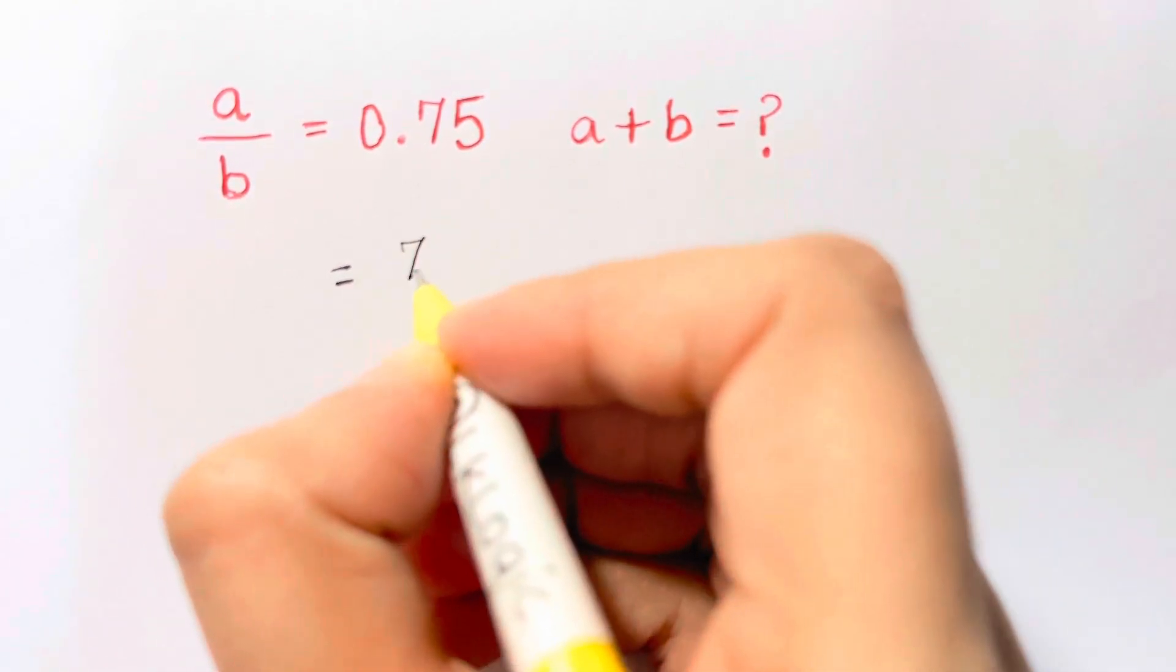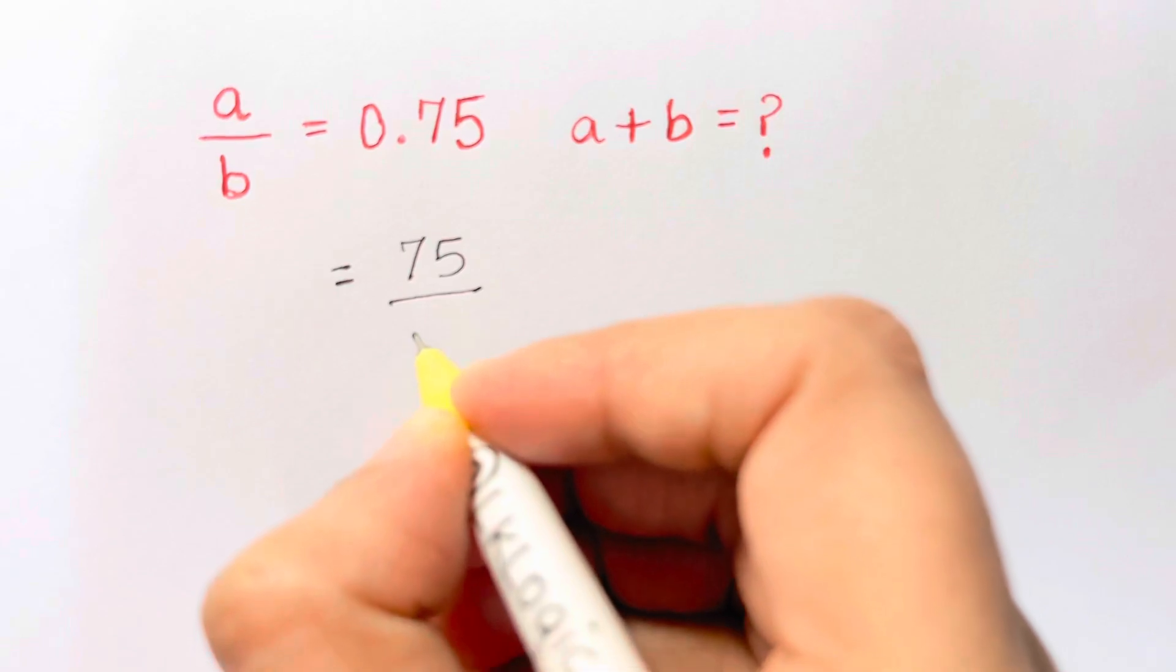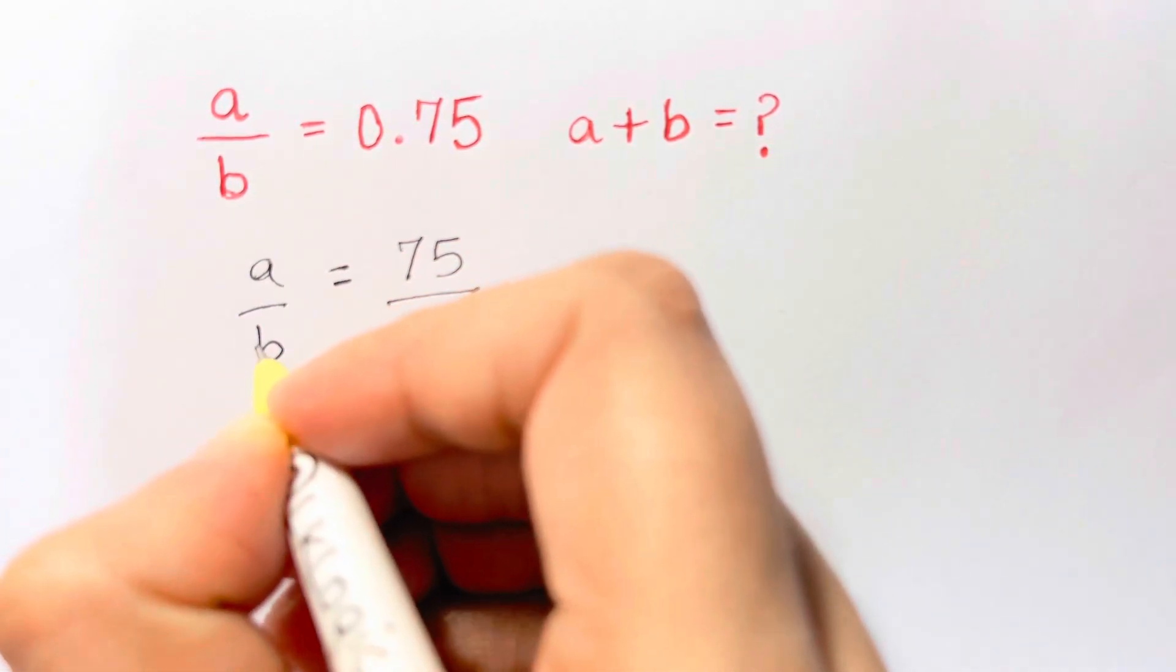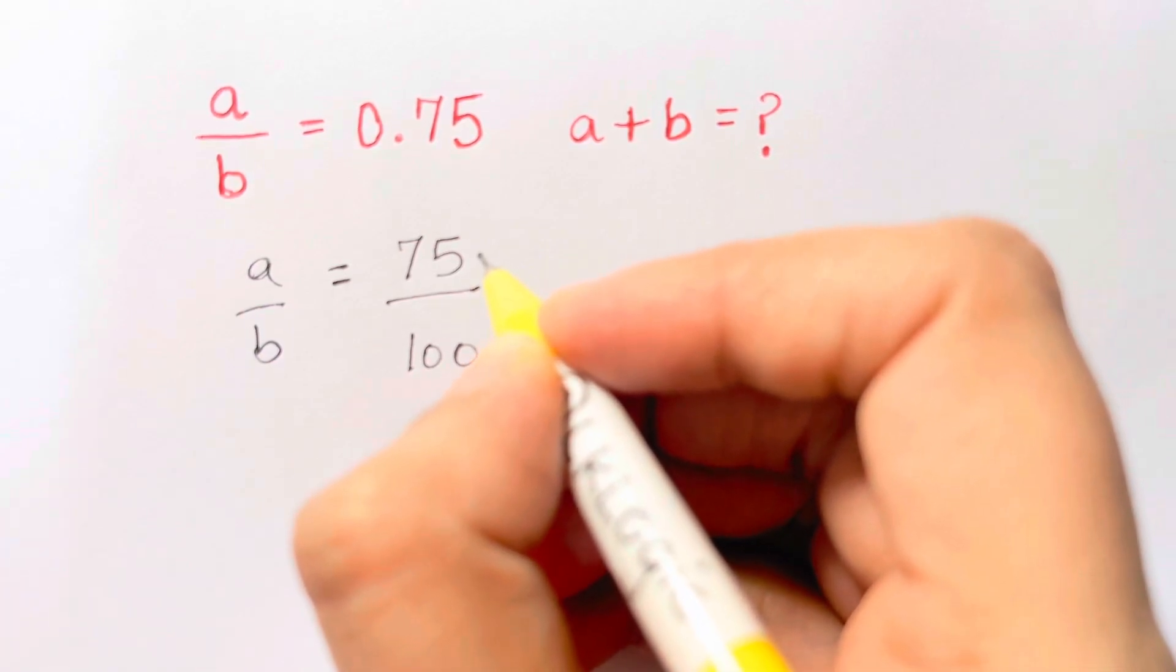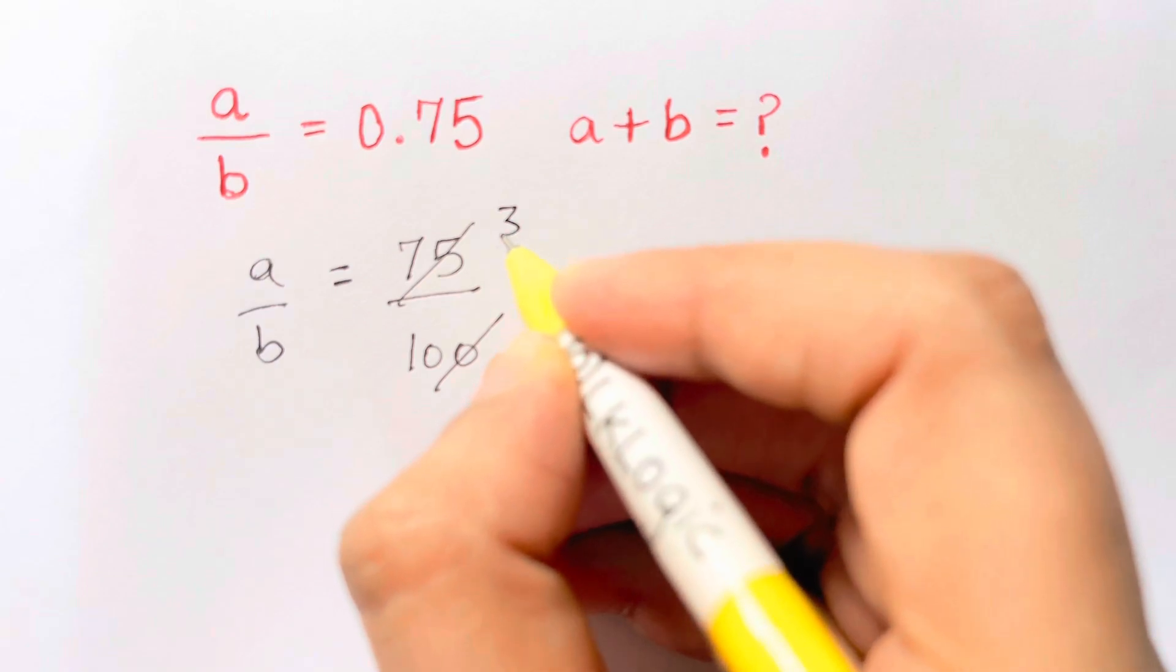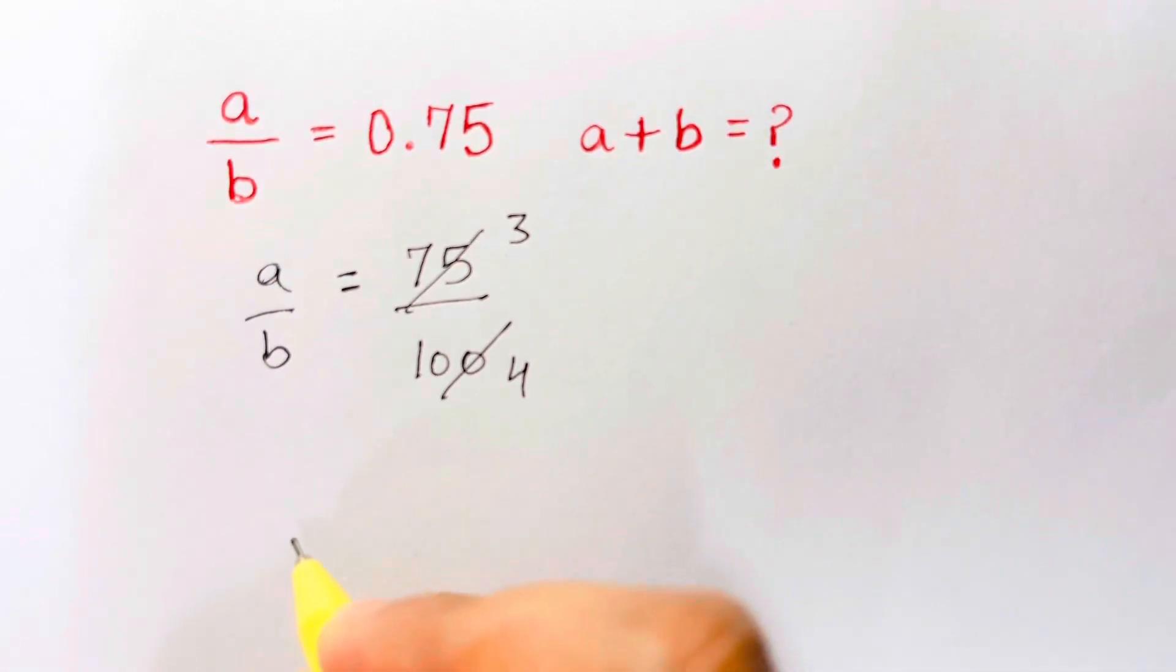It is 75 over 100, is that right? That's what is a over b. Now 75 over 100 is just 3 over 4, is that right? So we have a over b is equal to 3 over 4.